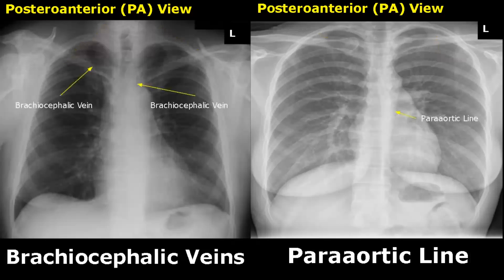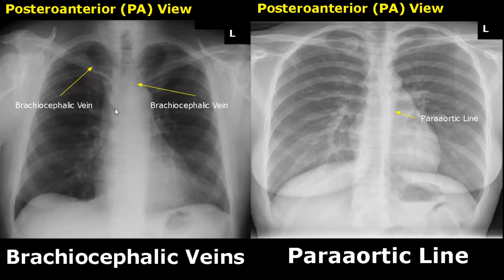Here are the brachiocephalic veins. The left brachiocephalic vein has a longer course because it goes from left to right to drain into the superior vena cava. The right brachiocephalic vein is shorter and has a more lateral course.